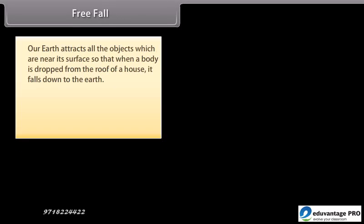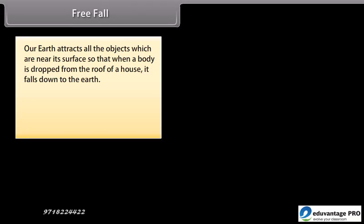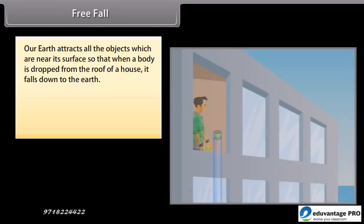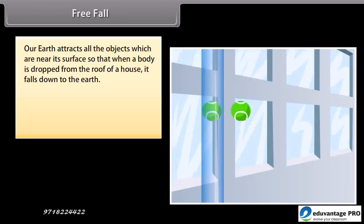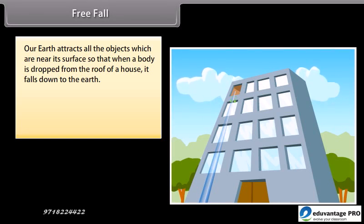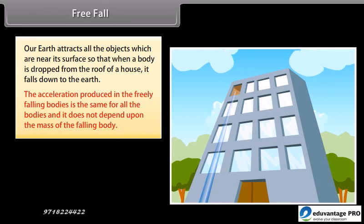Free Fall: The Earth attracts all objects near its surface, so when a body is dropped from the roof of a house, it falls down to the earth. The acceleration produced in freely falling bodies is the same for all bodies and does not depend upon the mass of the falling body.